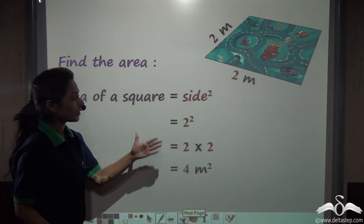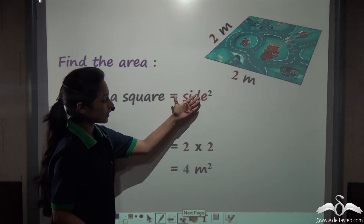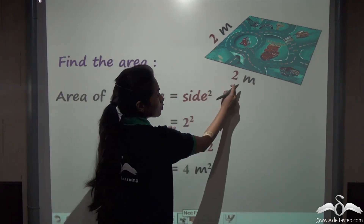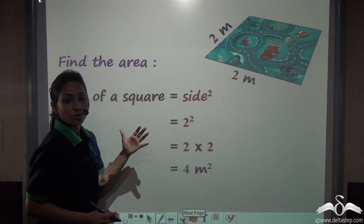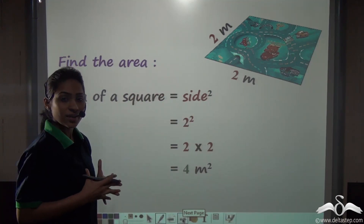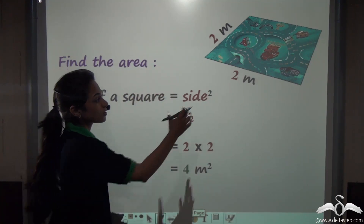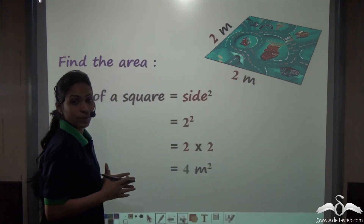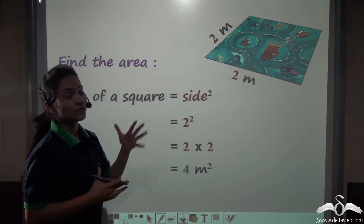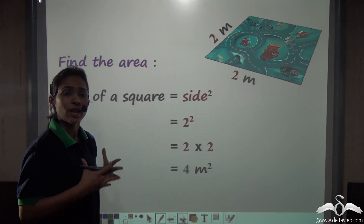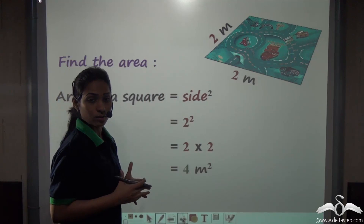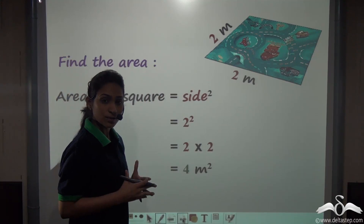This is how we get side into side, that is side squared. Similarly, here we used 2 squared. Now finding the area of this was very easy because here we have whole numbers. But every time the length of such carpets or any objects may or may not be in the form of whole numbers.